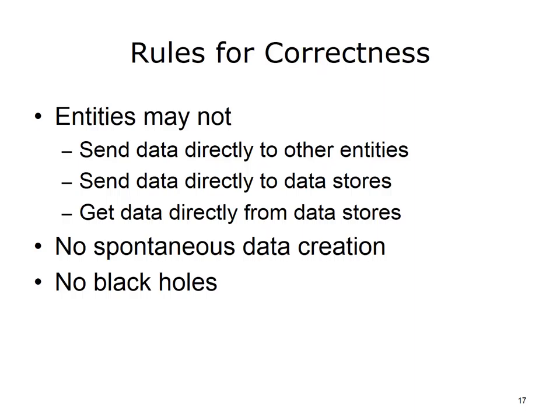Hopkins (2006) enumerated rules for correctness for these diagrams, which can be used to assess logical consistency. These rules include: entities may not send data directly to other entities; entities may not send data directly to data stores — data must be processed in some way first; entities may not get data directly from data stores — data must be processed first. Information is neither created nor destroyed; it must come from and go to somewhere via processes. Watch for spontaneous data creation and black holes. Note that in-only or out-only data stores may be acceptable when interfacing with another system. Data flows with a verb name signify a process that has been omitted.